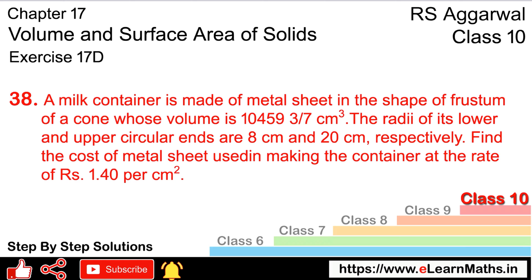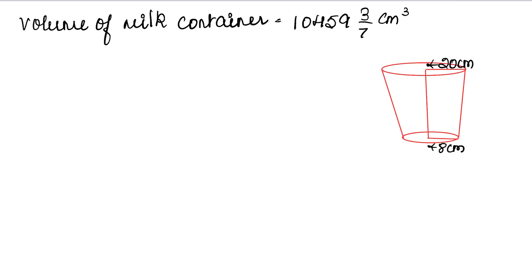हमें metal sheet की cost बतानी है। Metal sheet कितनी used हुई, यह पता करने के लिए हमें total surface area निकालना होगा। Total surface area के लिए height का पता होना ज़रूरी है, जो volume से मिलेगी। तो हम volume से height पता करते हैं।